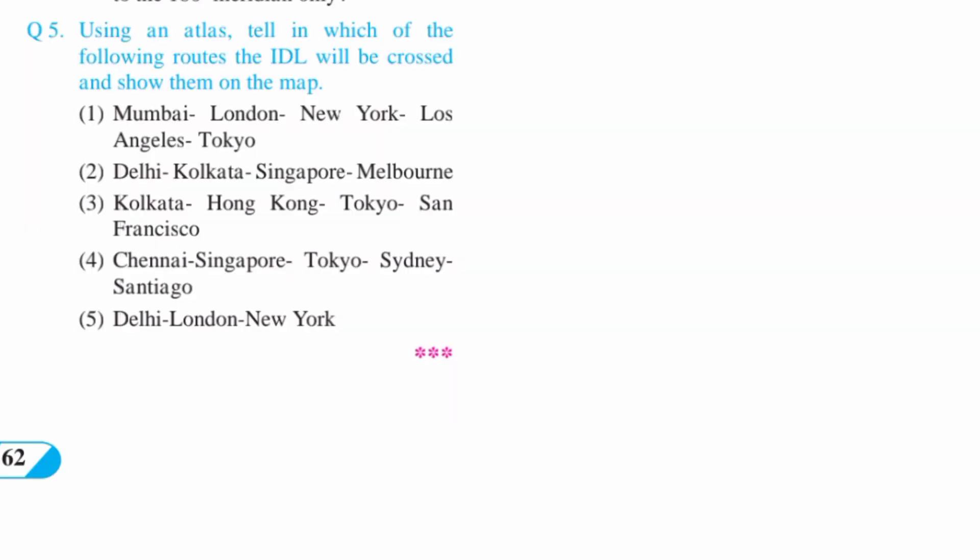All right, next question, question number 5. Using an atlas, tell in which of the following routes the dateline will be crossed and show them on the map.